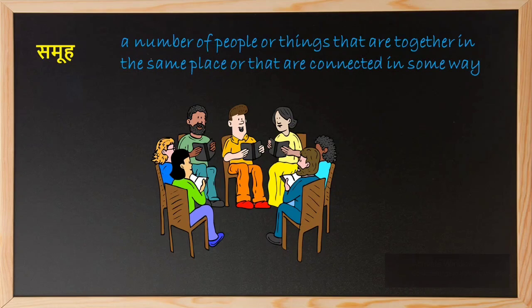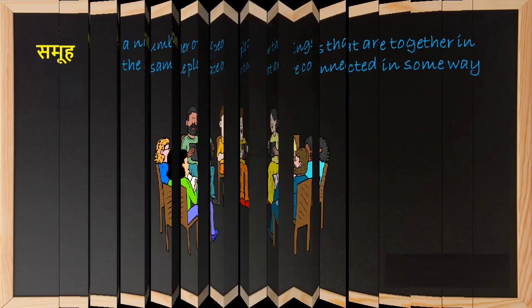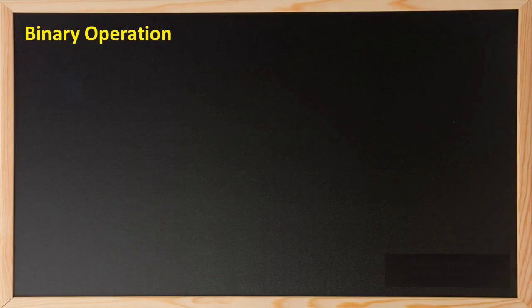But before understanding groups, we need to understand a very basic concept which is binary operation. Binary operation plays a very major role in all of group theory. We need to understand binary operation for learning group theory, because the whole of group theory is dependent on binary operation. So let us understand what is a binary operation.